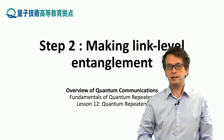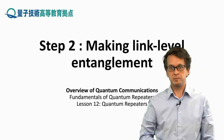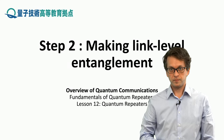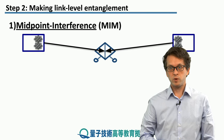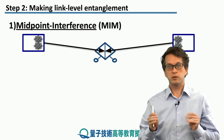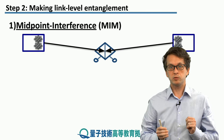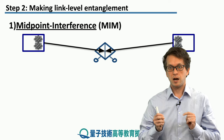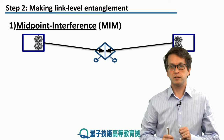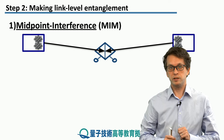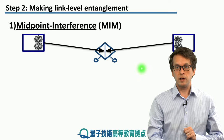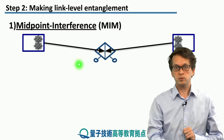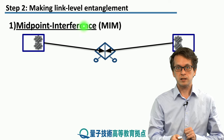Step 2: Making link-level entanglement. We will begin by considering two neighboring nodes in a network and see how we can establish entanglement between these nodes. A usual way to do that is in the following scenario.